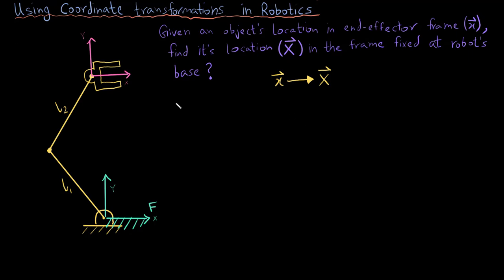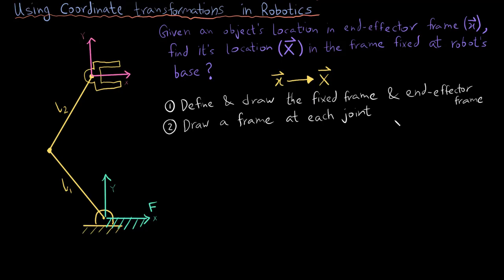There are a few steps that you need to follow. First, define and draw the fixed frame and the end effector frame. Second, draw a frame at each of the joints with its x-axis parallel to the next link. And third, mark out the rotation angles.